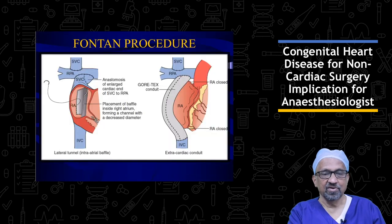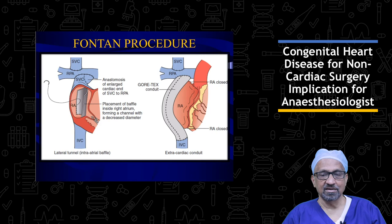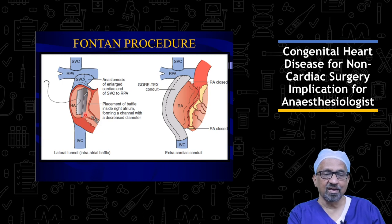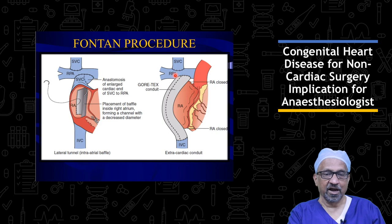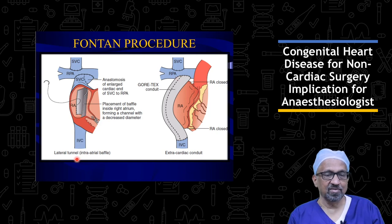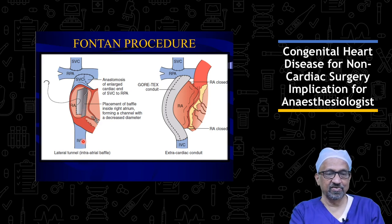The last condition is the Fontan procedure. Sometimes these patients may present for non-cardiac surgical procedures. There are two types of Fontan procedure: the intracardiac tunnel type, and the extracardiac conduit where the IVC is anastomosed to the right pulmonary artery while the superior vena cava is already anastomosed to the right pulmonary artery by a previous Glenn operation. In this arrangement, venous blood bypasses the right ventricle and goes directly into the pulmonary artery. An intra-atrial baffle can also be created to take IVC blood into the pulmonary artery for oxygenation.